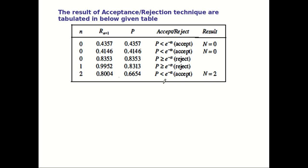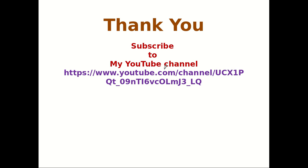All these values are tabulated in the table, showing n, the random number, the respective probability, whether it is accepted or rejected, and the final result. Out of 5 numbers, 3 are the random variates generated using Poisson distribution. Thank you. Please subscribe to my channel to see more videos on system modeling and simulation.